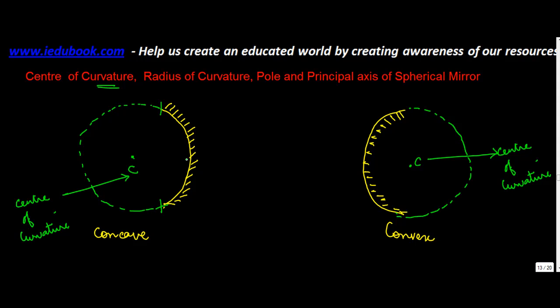Now what is one point that you have noted? The center of curvature actually lies in the front side of the mirror in case of a concave mirror, whereas center of curvature in a convex mirror lies on the back side. In both these cases the light falls and the reflection happens on this side.